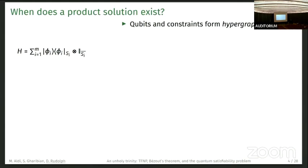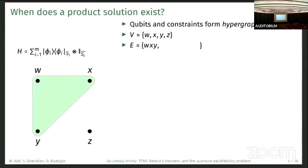The criteria here, we first need to look at our system as a hypergraph. The qubits and constraints form a hypergraph, and the vertices are the qubits. Here we have four qubits, and the constraints form hyperedges.